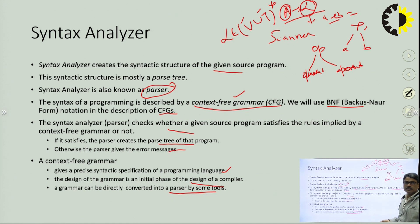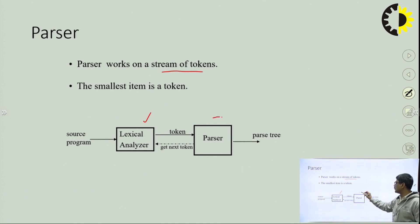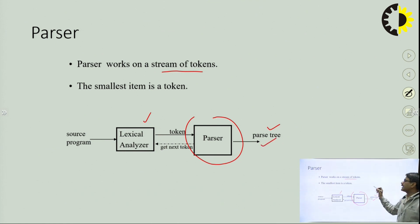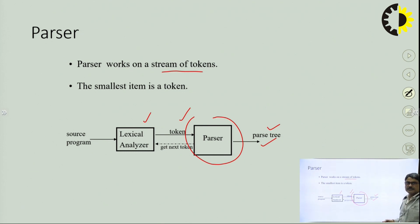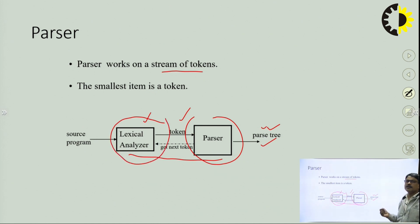In the next lecture, we are discussing different tools for that. If you are talking about a parser, it works on a stream of tokens — the lexical analyzer provides tokens for the parser, and then the parser generates the parse tree. The output from the lexical analyzer is taken as input for the parser, and after that the parse tree is generated. The smallest item is a token. Why is the lexical analyzer required? Because we cannot directly create the parse tree — it would require a lot of effort. That's why we divide the particular program into tokens first.